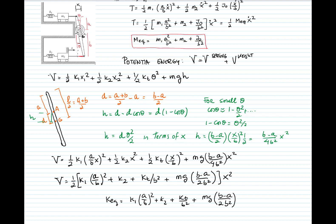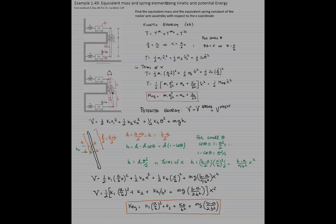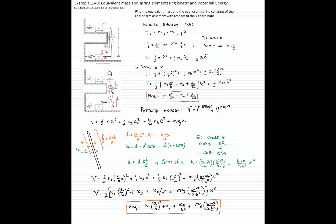So in these problems, using kinetic energy and potential energy, we were able to find the equivalent mass of the system and the equivalent constant of the spring, which represent all elements capable of accumulating energy.